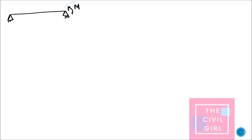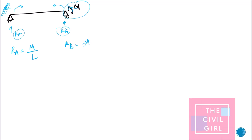Next question: a simply supported beam subjected to a moment at one end. It is always better to find reactions first. Since only one moment is applied, RA produces a clockwise moment and M produces an anti-clockwise moment — since they are opposite in sign, RA equals M/L. Since RB produces an anti-clockwise moment and M is also anti-clockwise, RB equals −M/L. From these reactions you can find the shear force diagram.